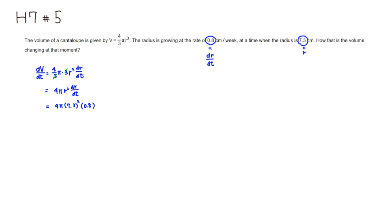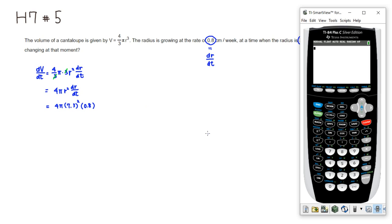So let's bring out a calculator. So we're going to just type in the value, so it's 4 pi - let's see, where is pi? Here, we'll pull pi - times 7.3, so 7.3, and squared, and times 0.8, then hit enter.